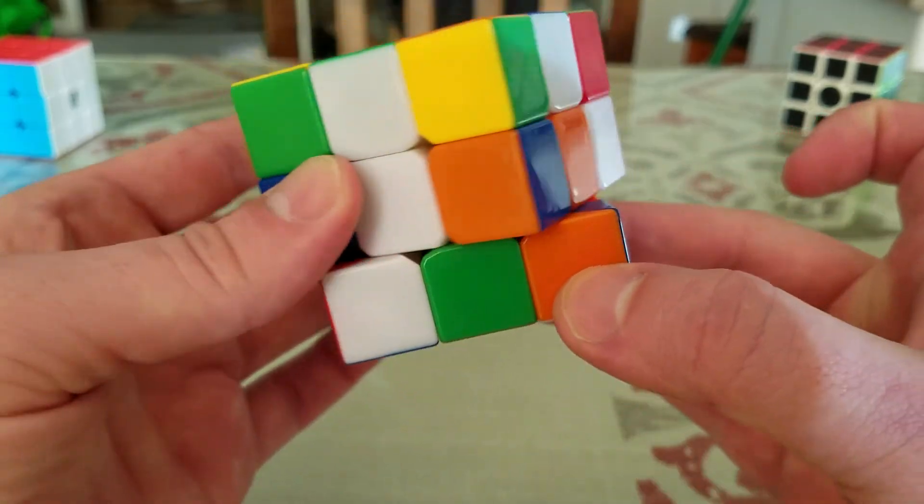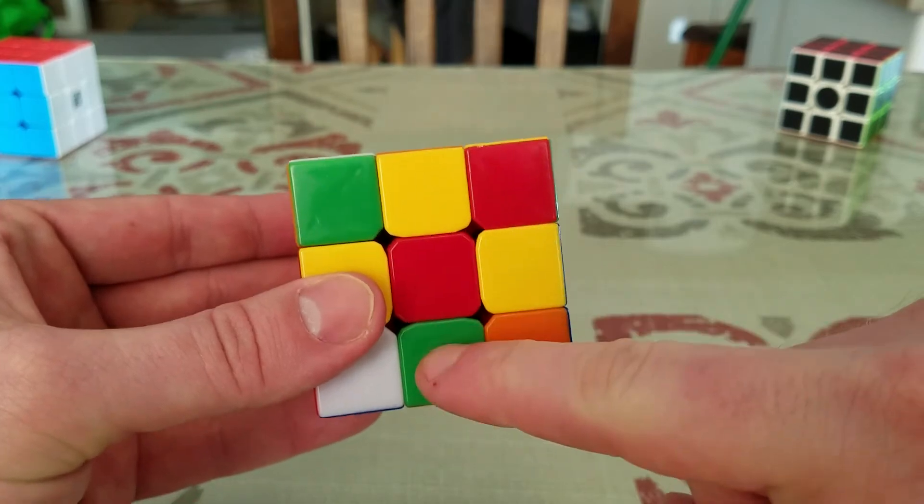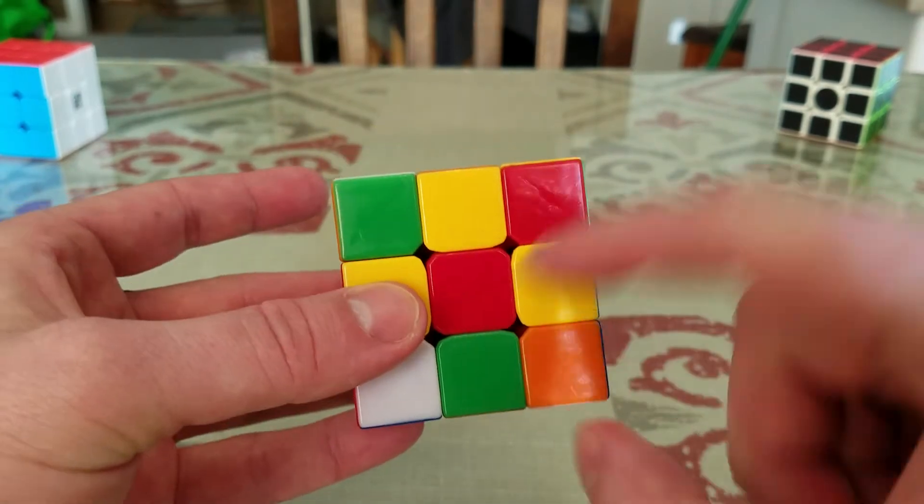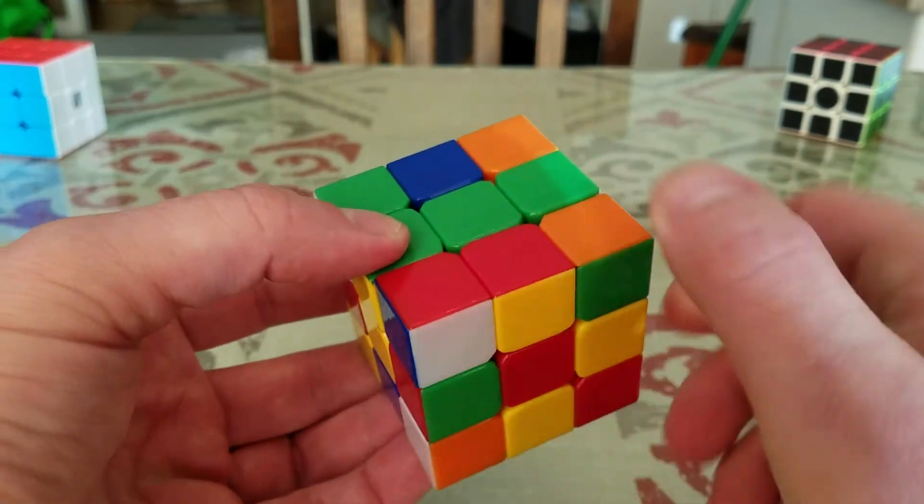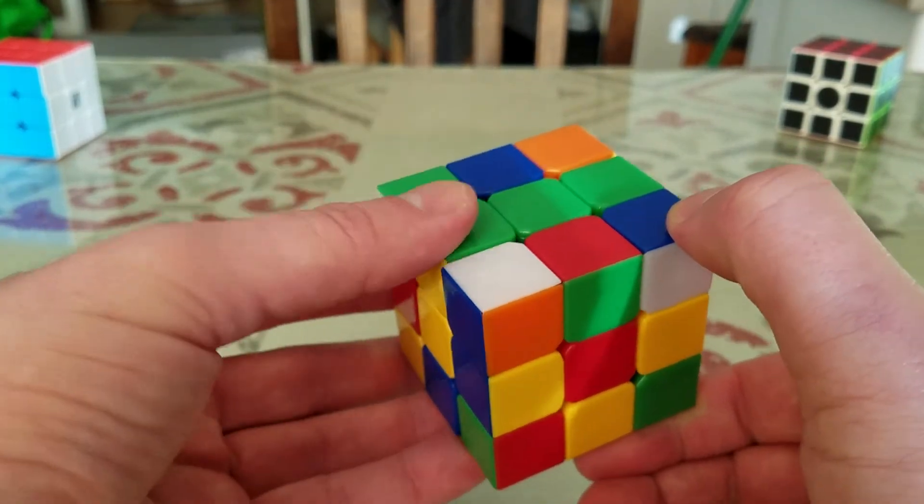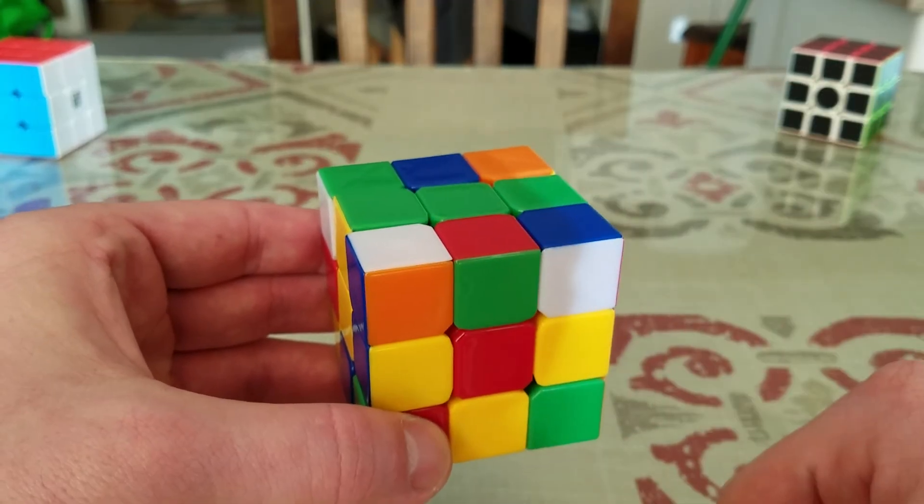And we're going to spin it around until now it's on the red side, but it's on the bottom. So now we would simply spin this up and we'll notice that it is in the right side, but the red and the green are backwards.